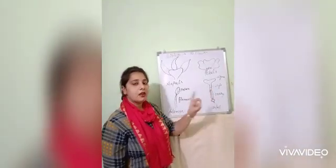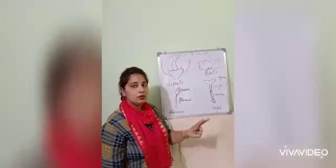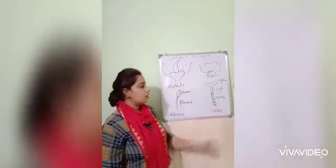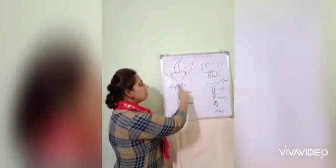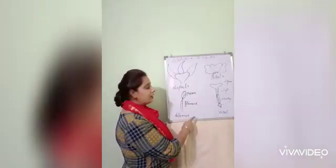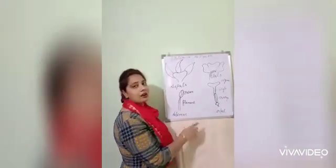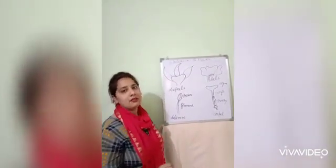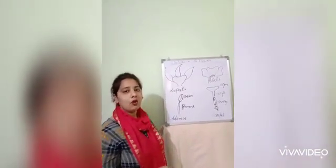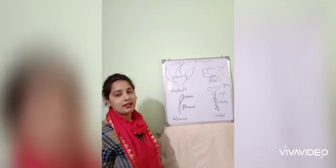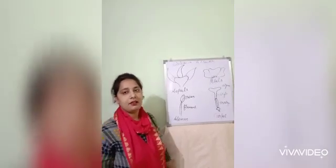The ovary is a reproductive part having a number of ovules where fertilization occurs. These are all the parts of a flower. With this, the topic of the flower is complete. Hope you all understand. Stay healthy, stay safe, stay home. Thank you.